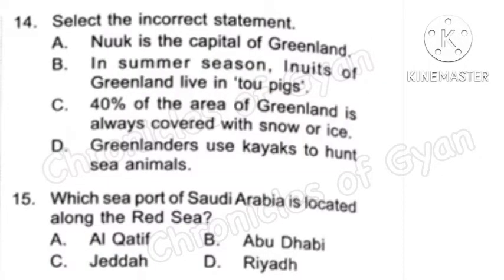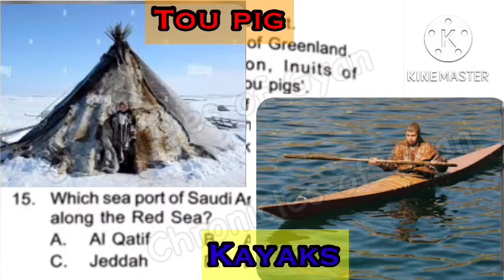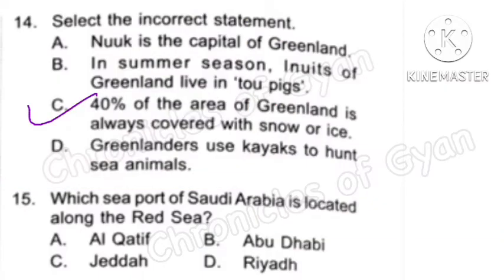Question 14: Select the incorrect statement. Option A — Nuuk is the capital of Greenland — is correct. Option B — In summer season, Inuits of Greenland live in tents — is also correct. Option D — Greenlanders use kayaks to hunt sea animals — is also correct. Option C — Only 40% of the area of Greenland is always covered with snow or ice — is incorrect, as 80% is covered with snow or ice. So the correct answer is Option C.